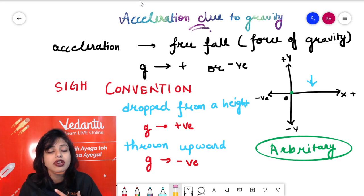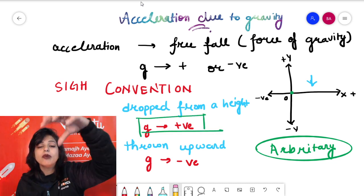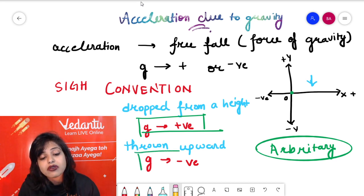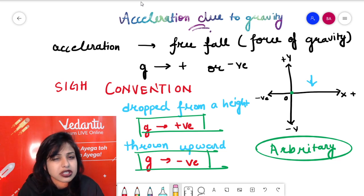By sign convention, if you want to make your life easy and follow one consistent approach: when a body is dropped from a height in the same direction as the force of gravity, g is positive, while when a body is thrown upward, g is taken to be negative. I hope this resolves your doubt.